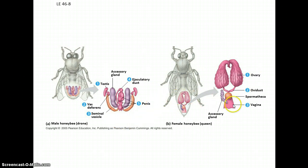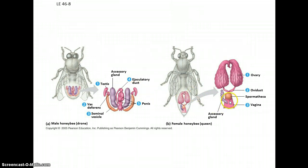There are variations on the theme with insects — these bees have internal fertilization. One interesting thing about bees is the females can mate with multiple males, but the males have the ability to remove sperm from previous matings, so they can skew the odds toward themselves being the father as long as they're the last ones to mate with the female.